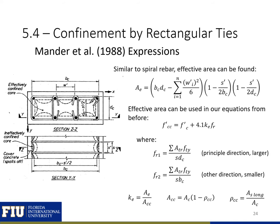Mander has a similar expression for rectangular ties as for circular ties. This expression also takes into account arching, but arching won't just happen between the rectangular ties vertically in the column — it will also happen within the cross-section, creating an ineffective area between ties within the section. We use this effective area to find our FR1 and FR2, the principal-direction and other-direction restraining stresses, and then use these to relate our confined concrete strength to our unconfined concrete strength. We'll apply this in an example problem later.